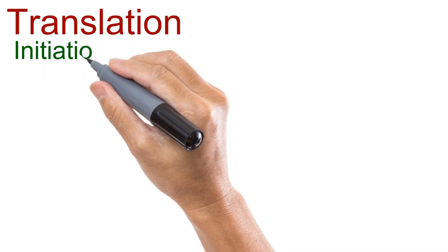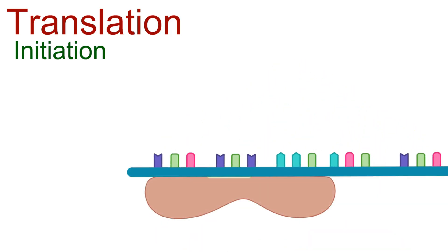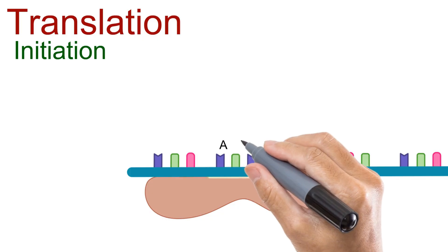Initiation is the starting point of protein synthesis. Here's how it unfolds. The small ribosomal subunit attaches to the mRNA strand at a specific site, close to the start codon.